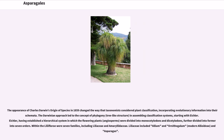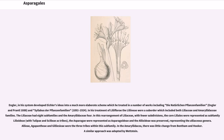The appearance of Charles Darwin's Origin of Species in 1859 changed the way taxonomists considered plant classification, incorporating evolutionary information into their schemes. The Darwinian approach led to the concept of phylogeny, a tree-like structure, in assembling classification systems, starting with Eichler. Eichler divided the flowering plants into monocotyledons and dicotyledons, further dividing the former into seven orders. Within the Liliiflorae were seven families, including Liliaceae and Amaryllidaceae. Engler developed Eichler's ideas into a more elaborate scheme, treated in works including Die natürlichen Pflanzenfamilien (Engler and Prantl, 1888) and Syllabus der Pflanzenfamilien (1892–1924).